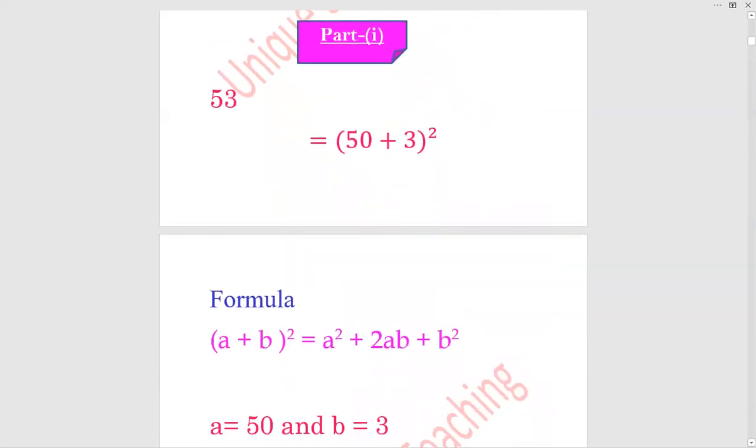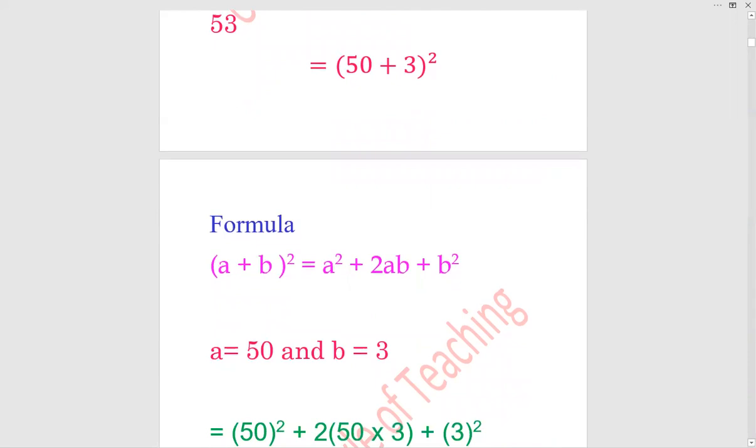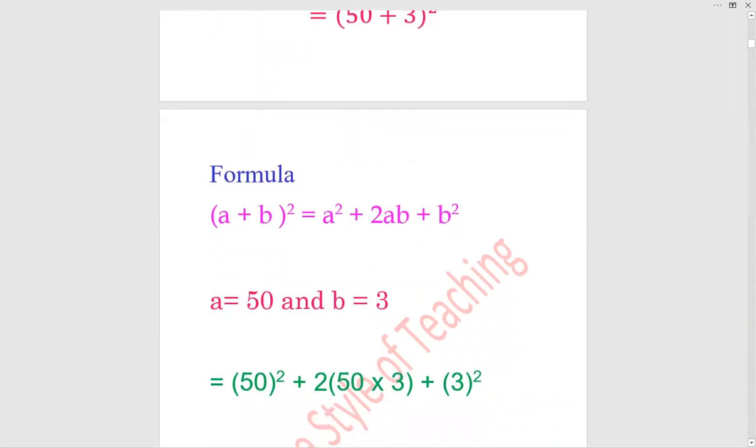(a + b)² = a² + 2ab + b². In this case a value is 50 and b value is 3. Now plug in the formula values: 50² plus 2 × 50 × 3, because 50 is a and b value is 3, plus b² which is 3².